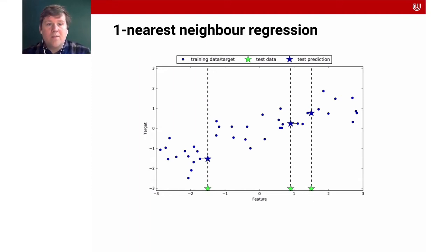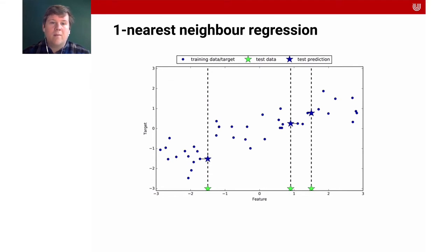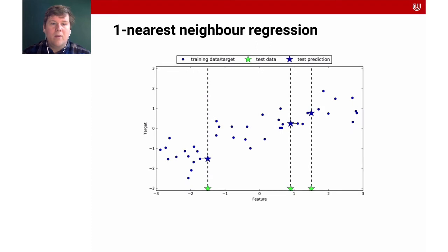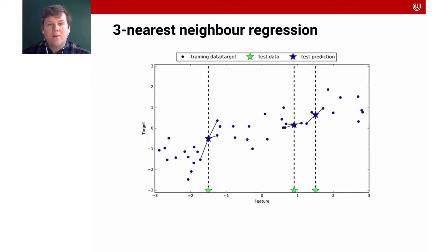That makes our test prediction. We don't want to take just one neighbor into account because we get better estimates by combining different data points. For instance, if we take three data points into account, we already have a better estimate. For the green star on the very left, the single-neighbor estimate is surprisingly low because there are also other houses with fewer square meters that sold for more. If we take the other two neighbors into account, we have a much better estimate.